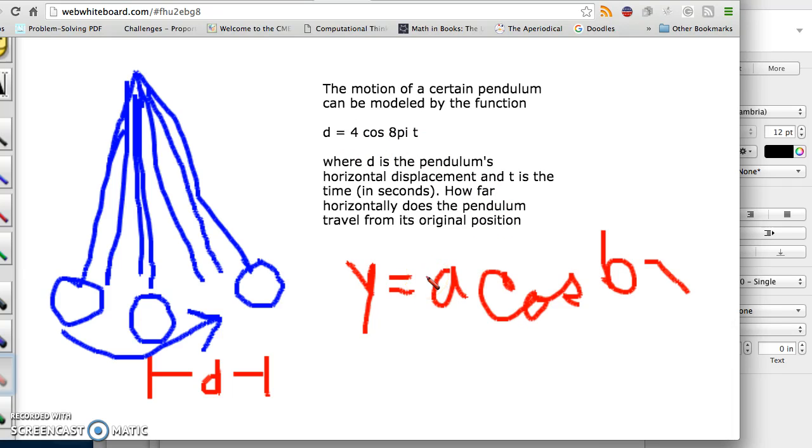So, that can give us the period and the amplitude. Now, what does the question ask for? How far horizontally does the pendulum travel from its original position? It's asking for distance. It's asking for the distance from here to here. Like, so this would be kind of a midline and this would be kind of a maximum, right? So, it's asking for an amplitude. The problem is really asking for an amplitude. So, that's easy, right? What's the amplitude? So, it's 4. So, the answer to this last part is 4.